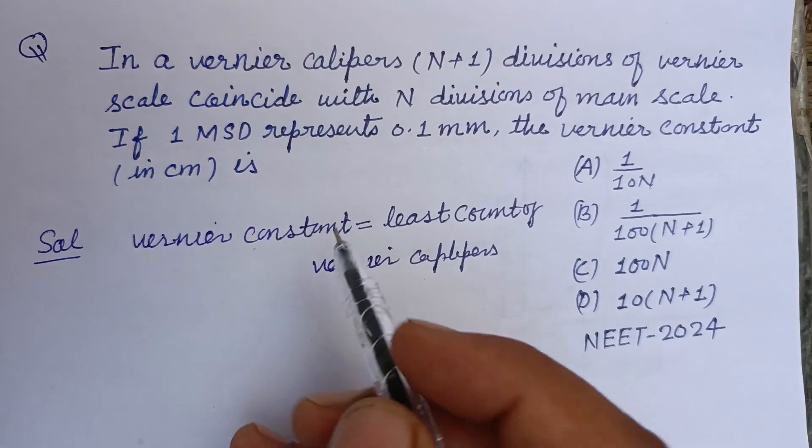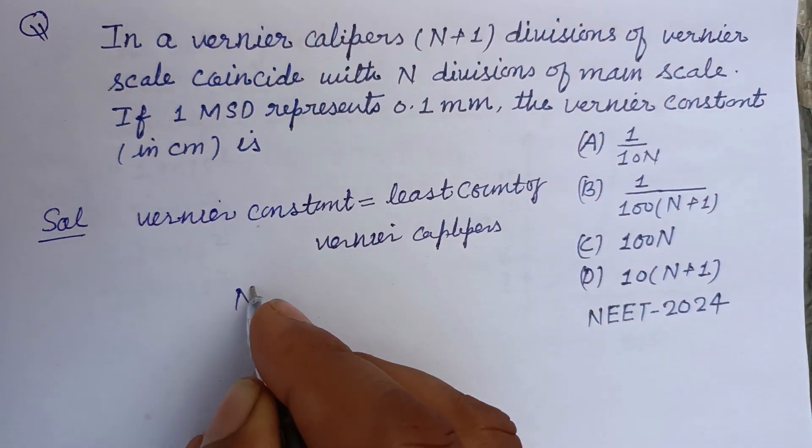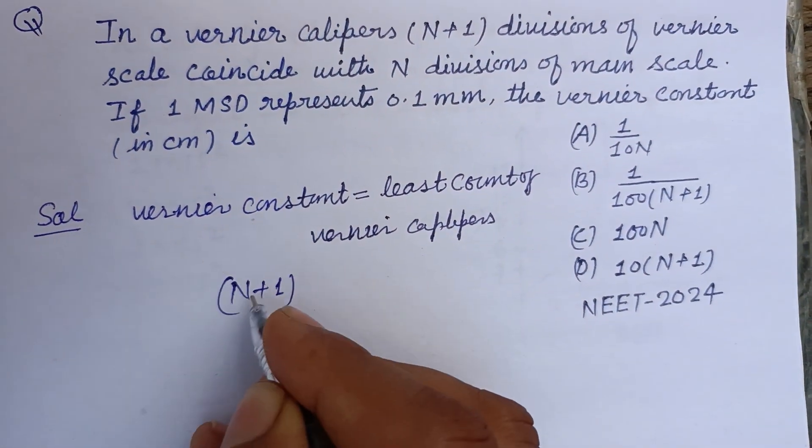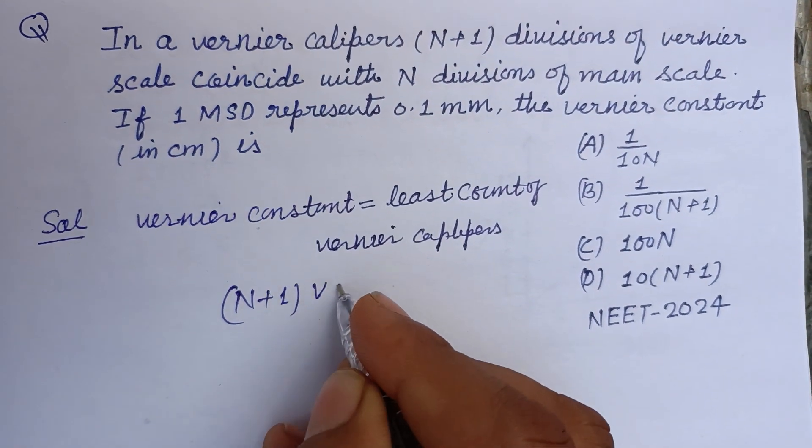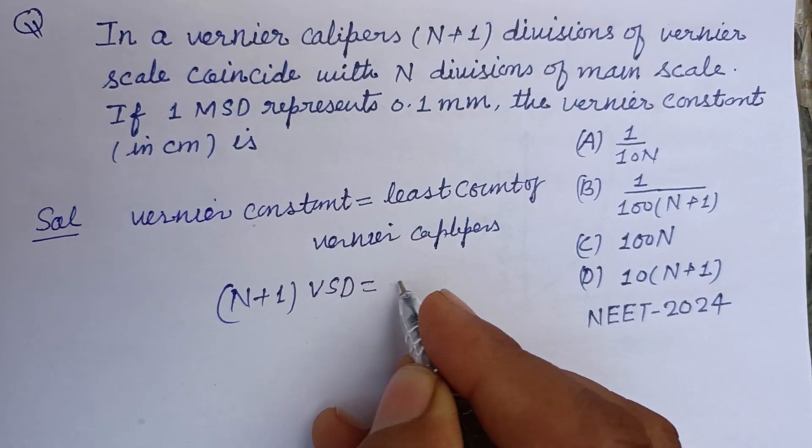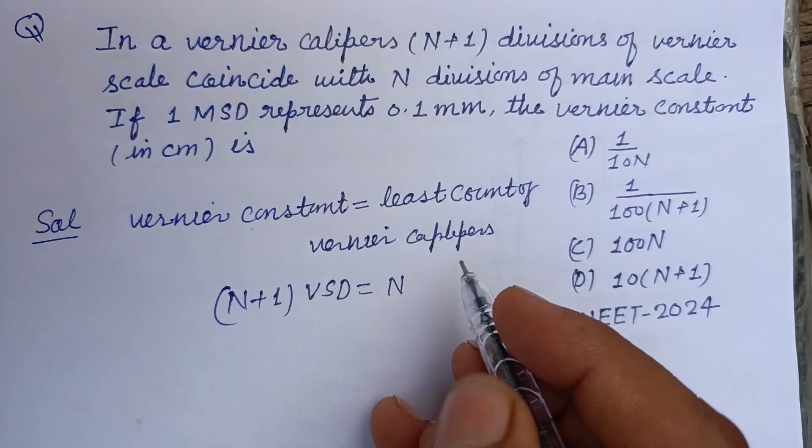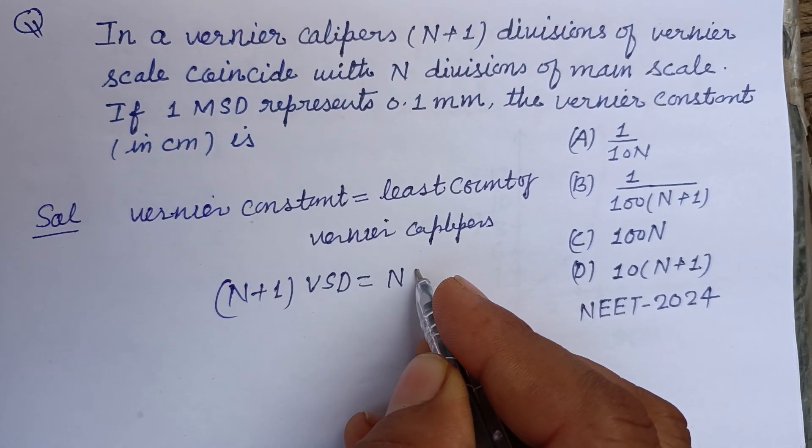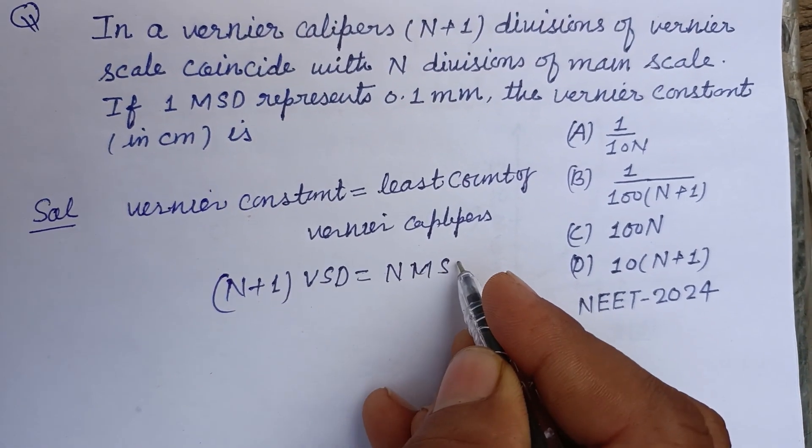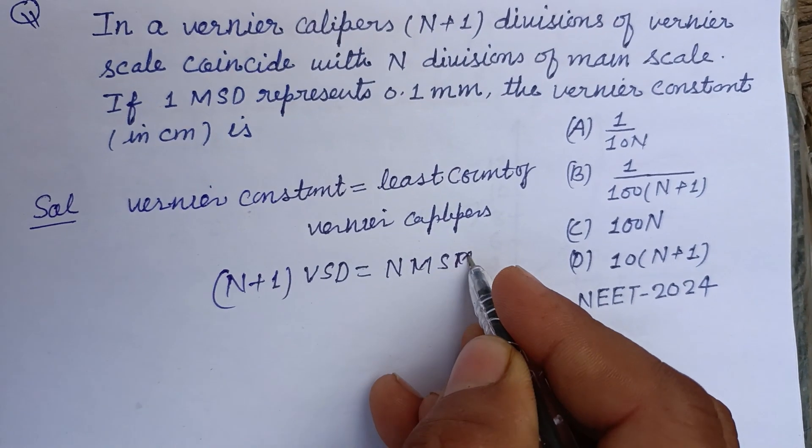So here it is given that N plus 1 division of Vernier scale division is equal to N division of main scale division, N MSD.